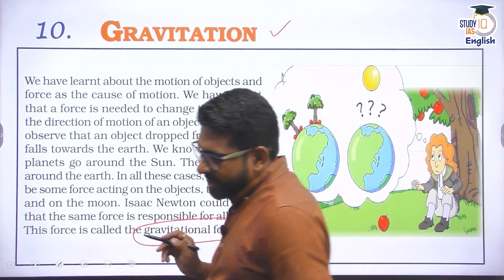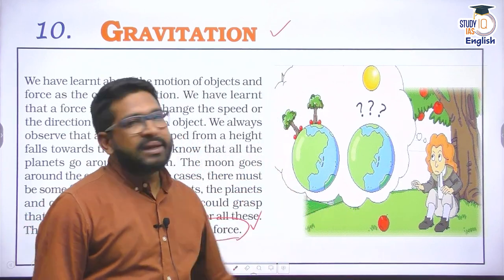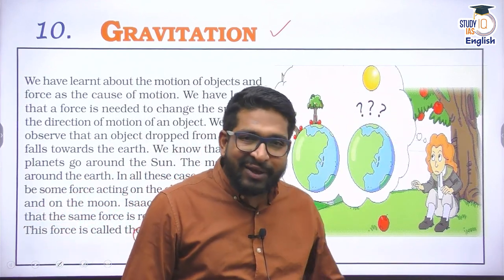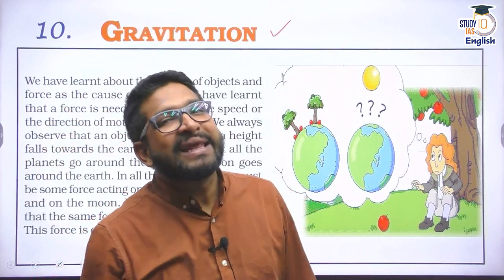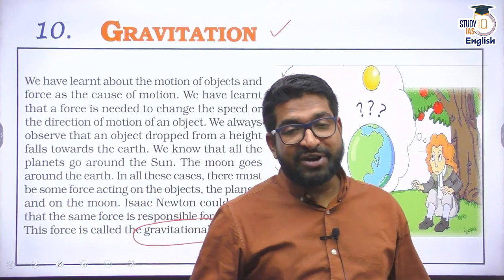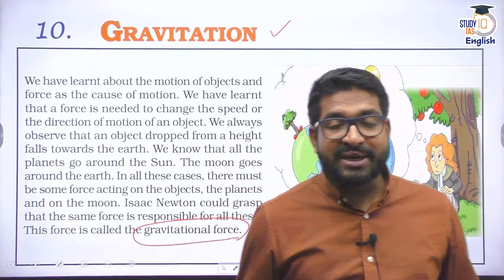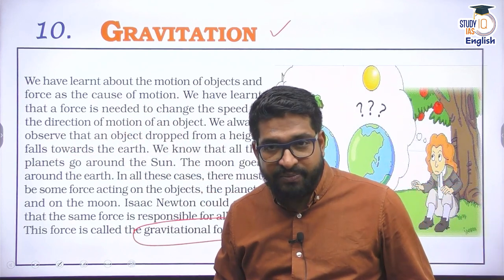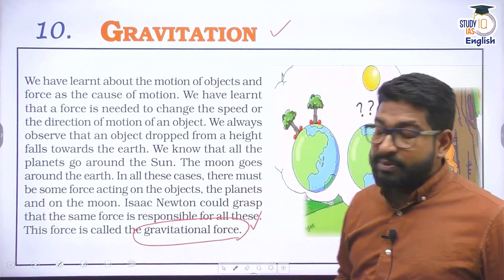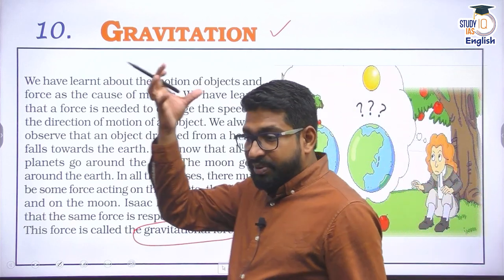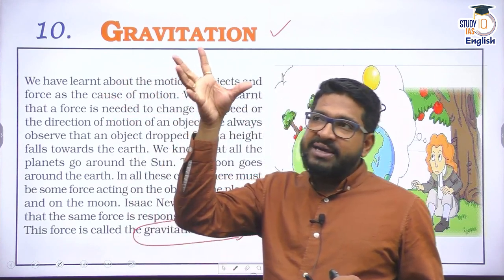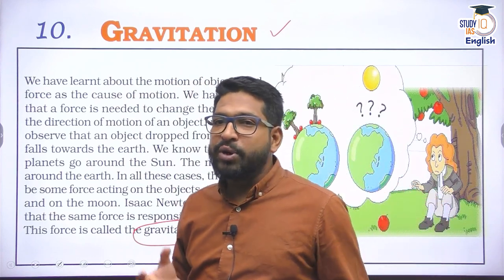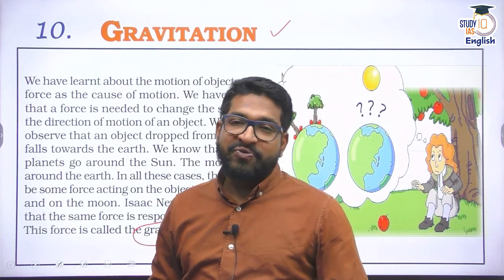One fine day, Isaac Newton was sitting under an apple tree. It is said an apple fell on his head, and he started thinking: why did it fall downward? He came up with the idea of gravity — the gravitational force. Newton started to think: the apple fell down on earth. But there is a sun. Why is the sun not falling on earth? There is a moon. Why is the moon not falling into earth? So he theorized the laws of gravitation.